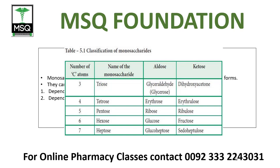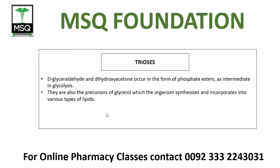DNA ki composition mein hum padhte hain ki pentose sugar mojood hota hai, aur wahi pentose sugar ka zikar hum yahan par kar rahe hain containing 5 carbon. Triose agar hum padhte hain to glyceraldehyde and dihydroxyacetone occur in the form of phosphate esters as an intermediate compound in glycolysis. When we study glycolysis, we will see that glucose converts to fructose and then to glyceraldehyde as an intermediate compound. They are also the precursors of glycerol, which the organism synthesizes and incorporates into various types of lipids.